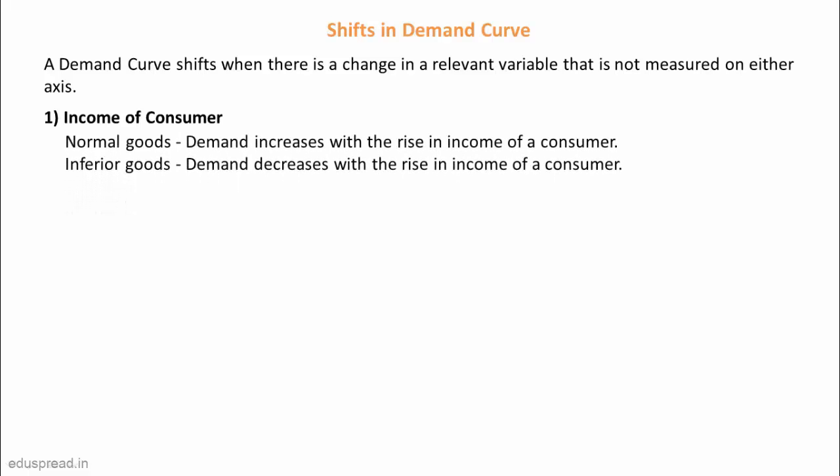Normal goods are those goods whose demand increases with the rise in income of a consumer. On the other hand, inferior goods are those goods whose demand decreases with the rise in income of a consumer.